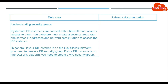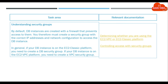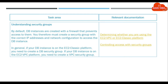Understanding security groups. By default, DB instances are created with a firewall that prevents access to them. You therefore must create a security group with the correct IP addresses and network configuration to access the DB instance. In general, if your DB instance is on the EC2-Classic platform, you need to create a DB security group. If your DB instance is on the EC2-VPC platform, you need to create a VPC security group. See: Determining whether you are using the EC2-VPC or EC2-Classic platform, and Controlling access with security groups.